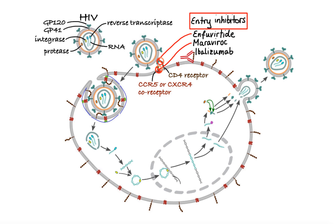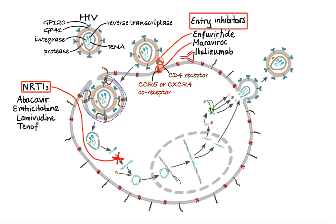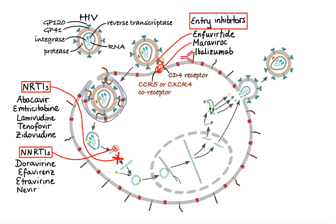Moving on to the next class of HIV drugs, that is reverse transcriptase inhibitors. Drugs in this class are divided into competitive and non-competitive inhibitors. Nucleoside reverse transcriptase inhibitors, abbreviated NRTIs, are structural analogues of nucleic acids that competitively inhibit reverse transcription by causing chain termination after they've been incorporated into viral DNA. Drugs in this group include abacavir, emtricitabine, lamivudine, tenofovir, and zidovudine. Non-nucleoside reverse transcriptase inhibitors, abbreviated NNRTIs, bind to and denature reverse transcriptase enzyme, causing non-competitive inhibition. Drugs in this group include doravirine, efavirenz, etravirine, nevirapine, and rilpivirine.